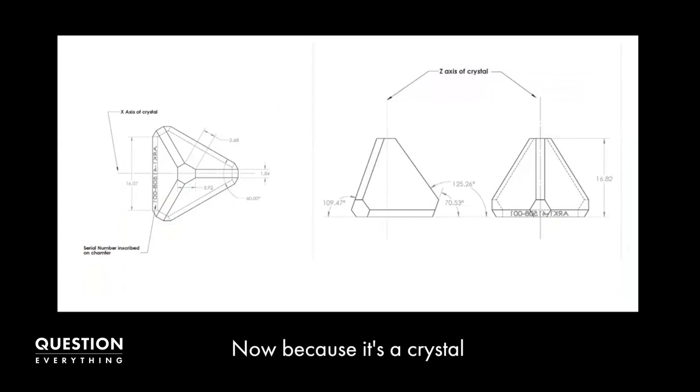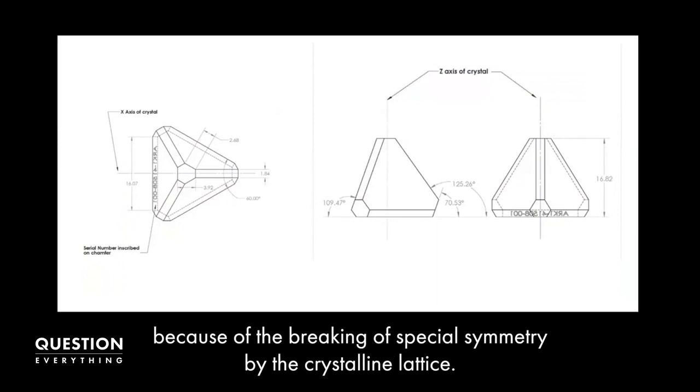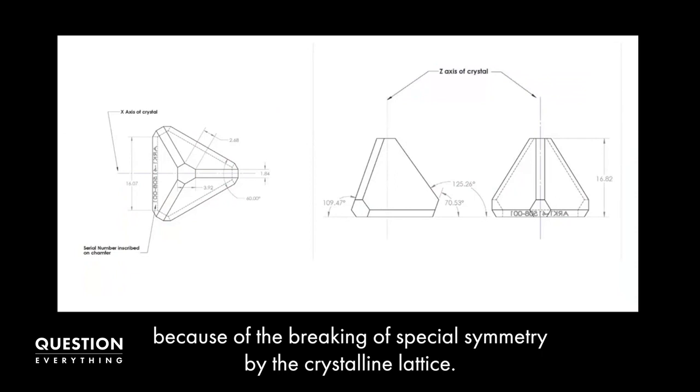Because it's a crystal, each of the axes have different properties because of the breaking of spatial symmetry by the crystalline lattice. In one orientation, you have the Z axis, pictured on the right. That is the optical axis. It polarizes light and is also birefringent for both light and sound.